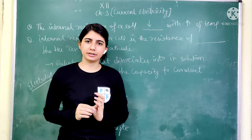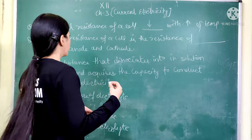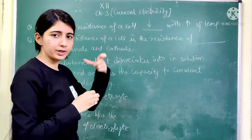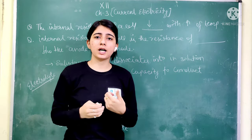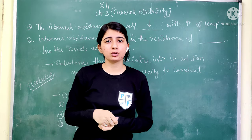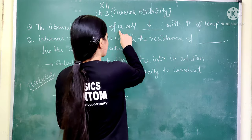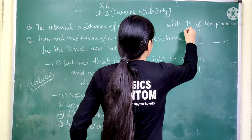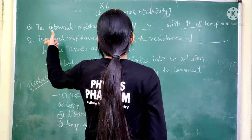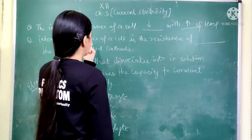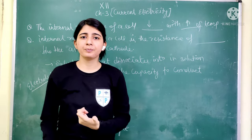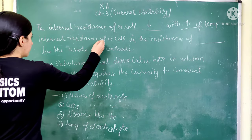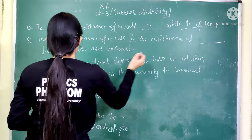Internal resistance is denoted by small r. Another question is: if we increase the temperature of a cell, what happens to the internal resistance? The answer is it will decrease. Internal resistance decreases with an increase in temperature.